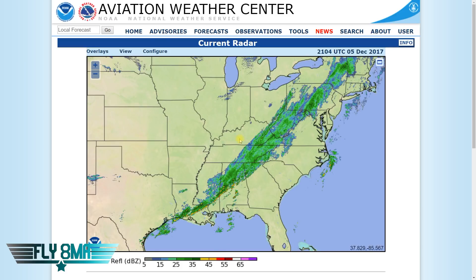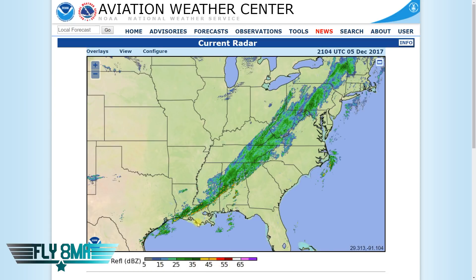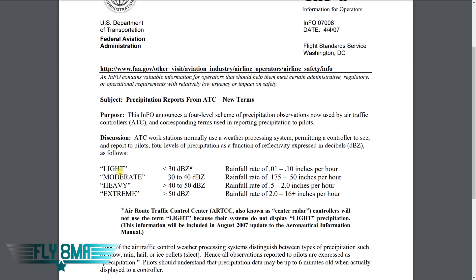Let's look at what the actual decibel levels mean to us. We'll always want to compare the color codes to the actual decibel levels on the chart. The FAA put out an info supplement that defines what light, moderate, heavy, or extreme precipitation is. When you hear those terms from an air traffic controller, it's a standard - a certain decibel return. So 40 to 50 decibels is heavy precipitation at a half to two inches per hour. Extreme precip is anything greater than 50 decibels, with a rainfall rate of two inches or greater per hour.